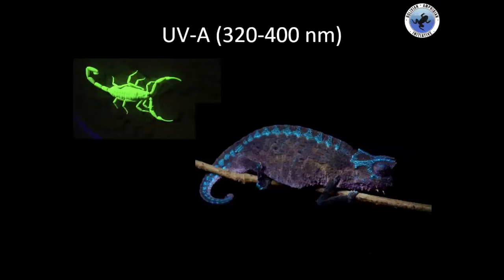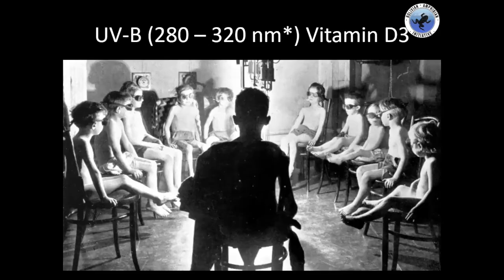UVA is mainly used by some animals — invertebrates and vertebrates — for communication. For example, scorpions, chameleons, bees, or butterflies can use UVA to find flowers more efficiently. And UVB, as mentioned, is the source for the synthesis of vitamin D, which allows us to absorb the calcium we eat or drink in our diet. The same applies to amphibians — this is the range of UVB that is important for the synthesis of vitamin D3.